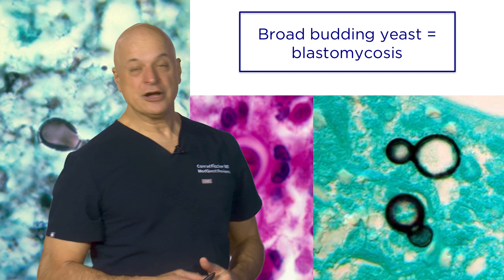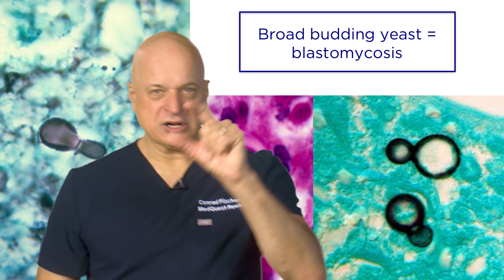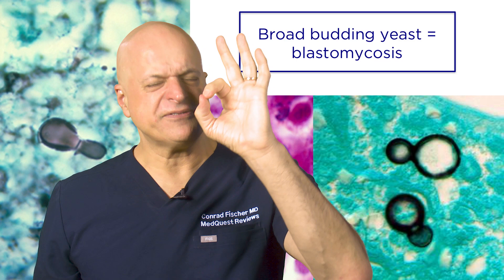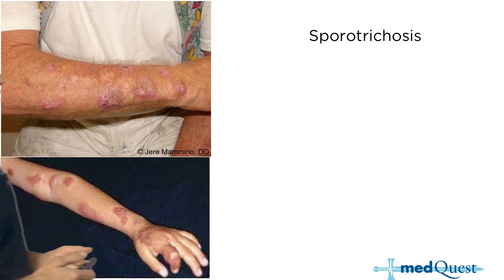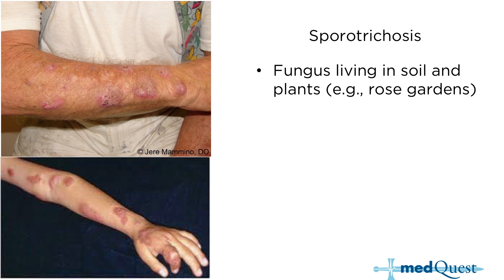You'd have to be told 'broad budding' — yeast come out and they get pinched off, very narrow, like twisting a balloon. Rose gardener's disease — sporotrichosis — can happen in normal people. Unlike histoblasto-crypto-cocci, which are very unlikely to disseminate in a normal host, sporotrichosis can go through the skin in a normal host and be very nasty — it can actually spread across the face.